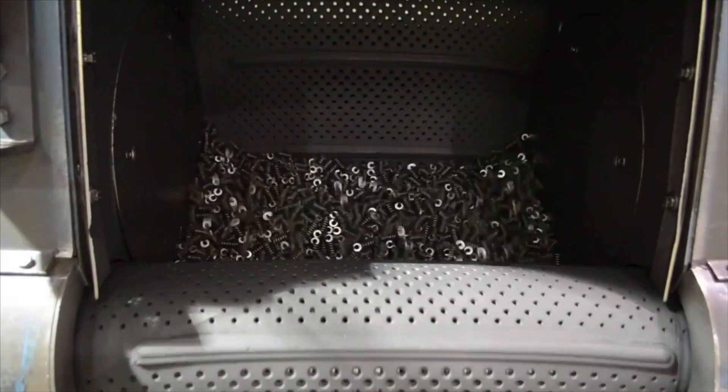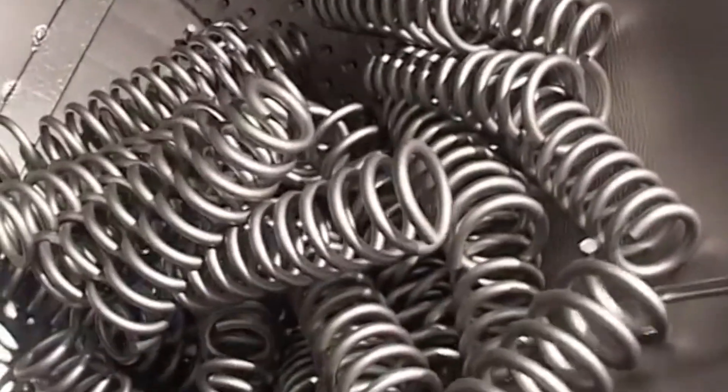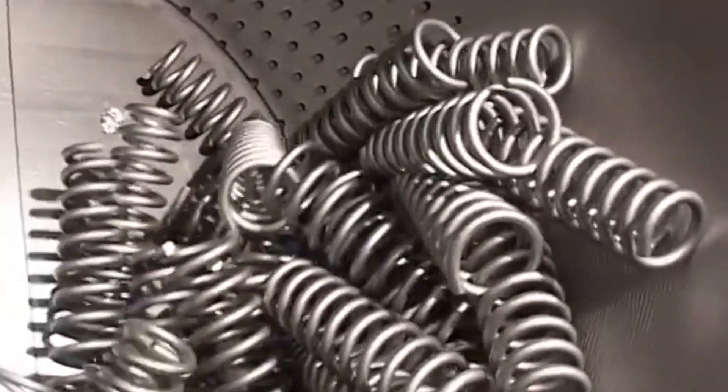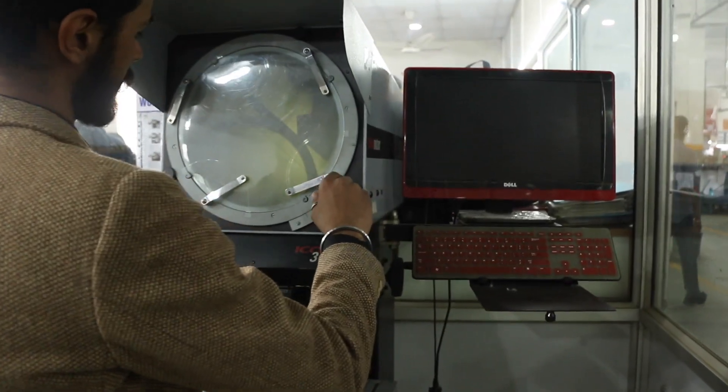Step four: shot peening. From here, springs are placed in a shot peener where they are bombarded at high speeds with hardened steel shots. This enhances fatigue strength and prevents cracking.